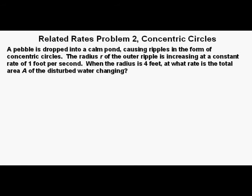A pebble is dropped into a calm pond causing ripples in the form of concentric circles. The radius R of the outer ripple is increasing at a constant rate of 1 foot per second. When the radius is 4 feet, at what rate is the total area A of the disturbed water changing?